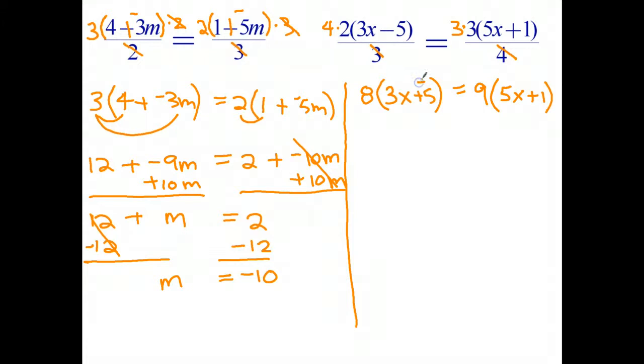So I'll change my subtraction to add the negative. 8 times 3x is 24x plus 8 times negative 5 is negative 40. 9 times 5x is 45x plus 9 times 1 is 9. Step 1, remove the fractions. Step 2, remove the brackets by expanding.